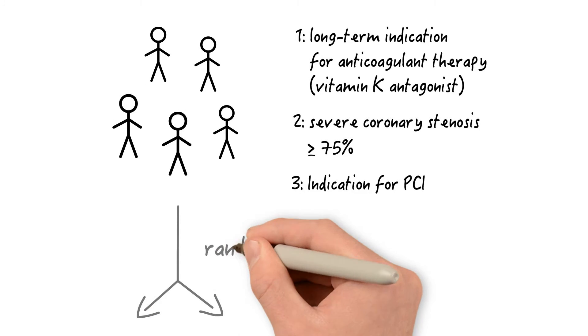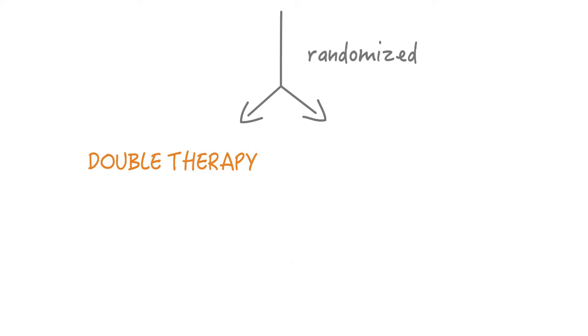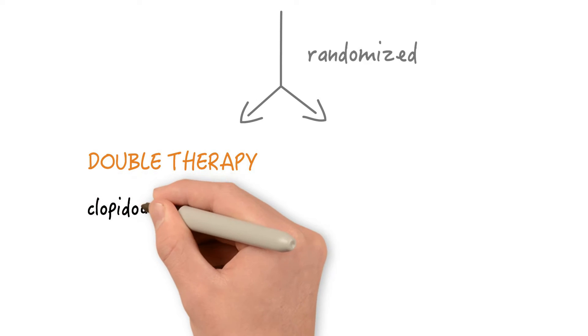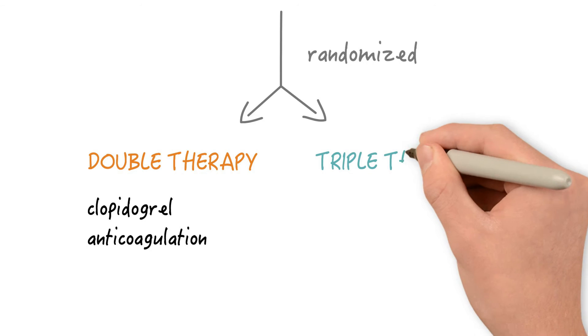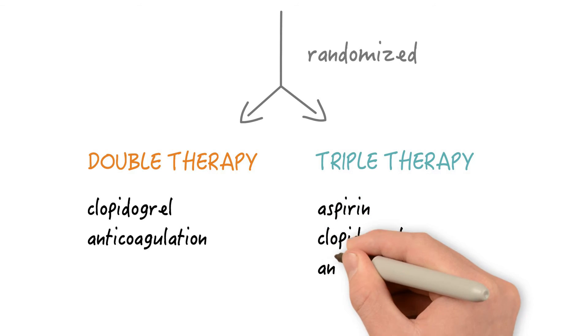These patients were then randomized into one of two groups. The double therapy group received a combination of clopidogrel and anticoagulation. The triple therapy group received a combination of aspirin, clopidogrel, and anticoagulation.